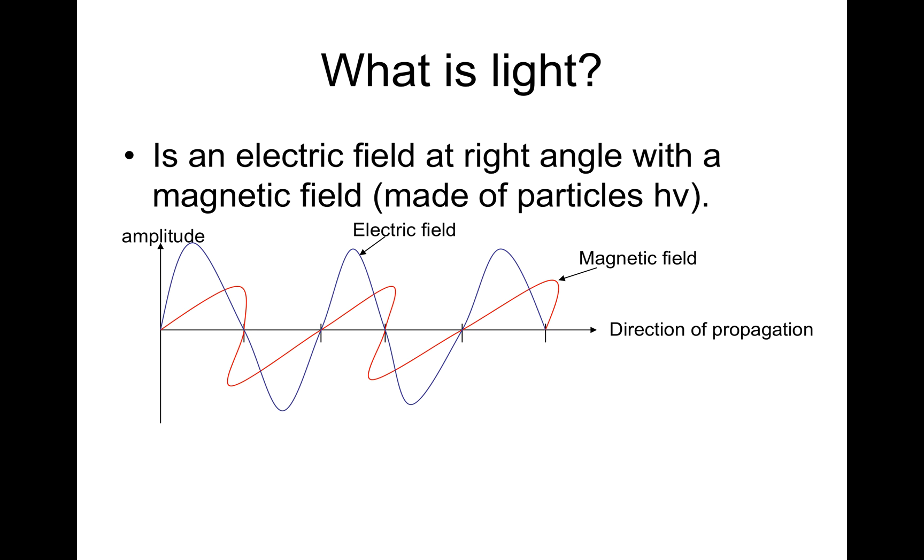Light is an electric field at right angles with a magnetic field, made of particles known as photons. Here we have the blue curve representing the electric field amplitude while the red curve represents the magnetic field. The direction of propagation is in the x-axis direction where the amplitude is in the y direction.